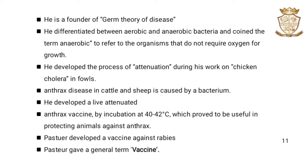He developed the process of attenuation during his work on chicken cholera in fowls. He found that cultures which had been stored in the laboratory for some time would not kill animals as fresh cultures did. This attenuation is now used in protective vaccination against diseases. Anthrax disease in cattle and sheep is caused by bacteria. He developed a live attenuated anthrax vaccine by incubation at 40 to 42 degrees Celsius, which proved useful in protecting animals against anthrax. Pasteur also developed a vaccine against rabies and gave a general term: vaccine.